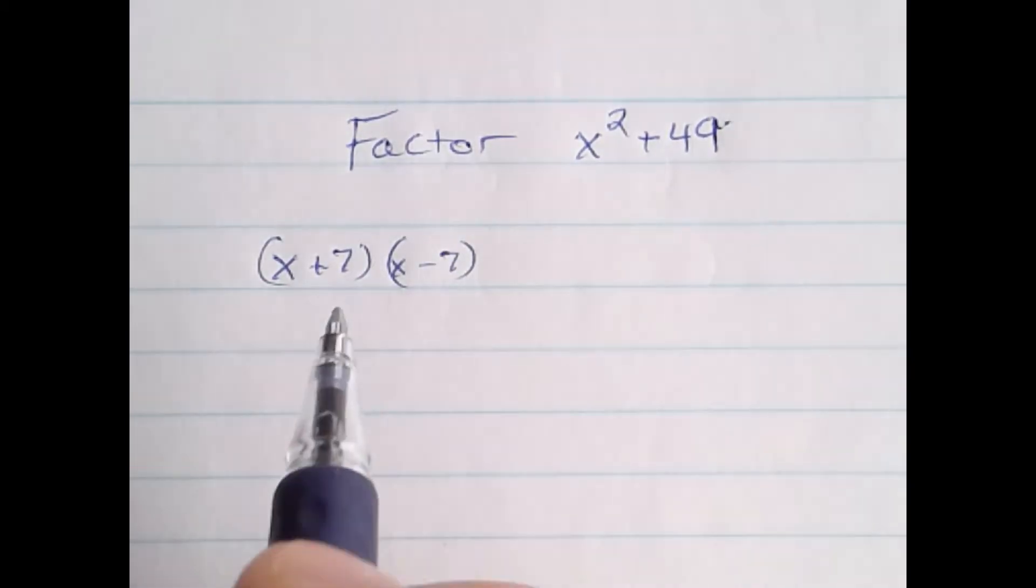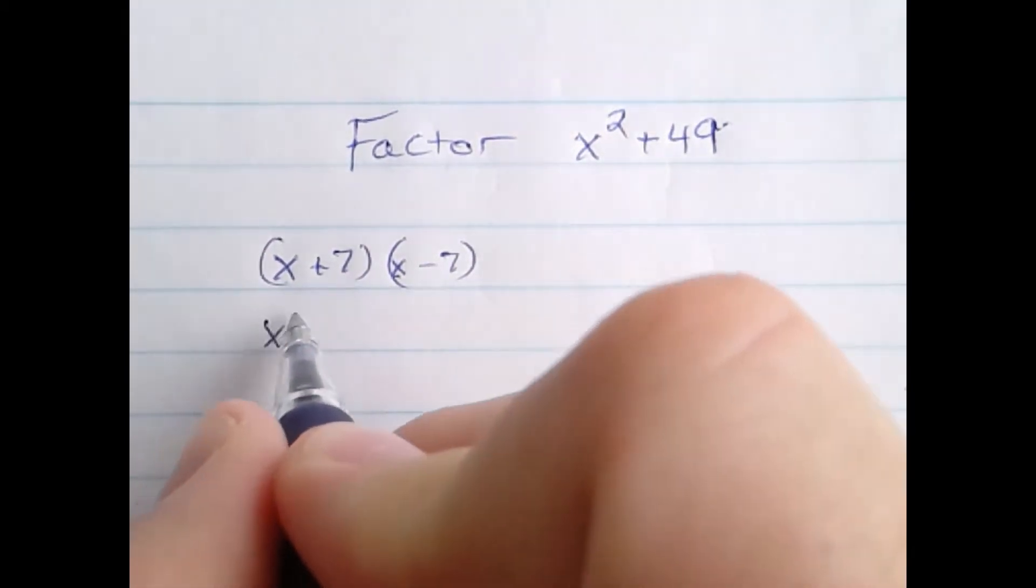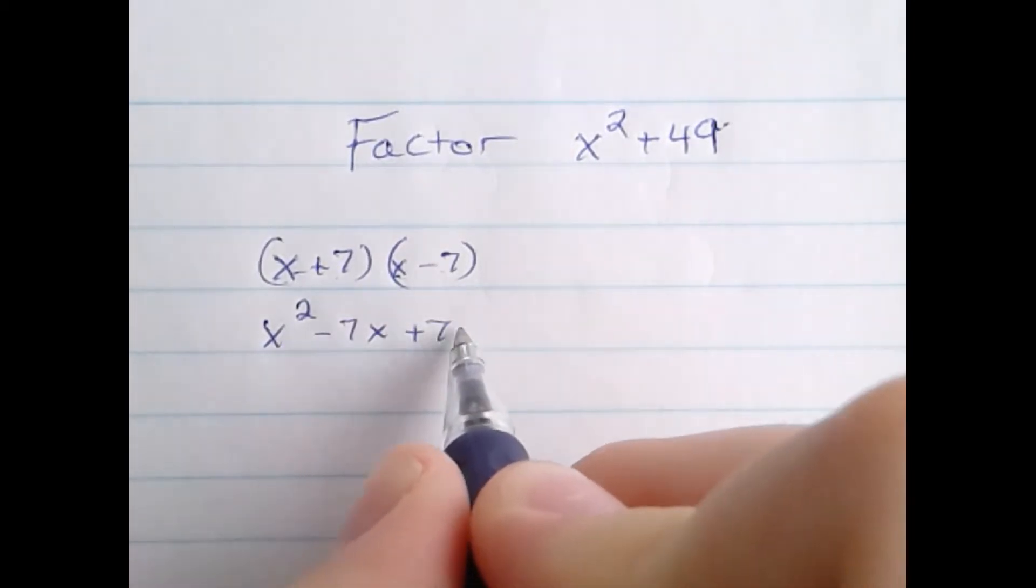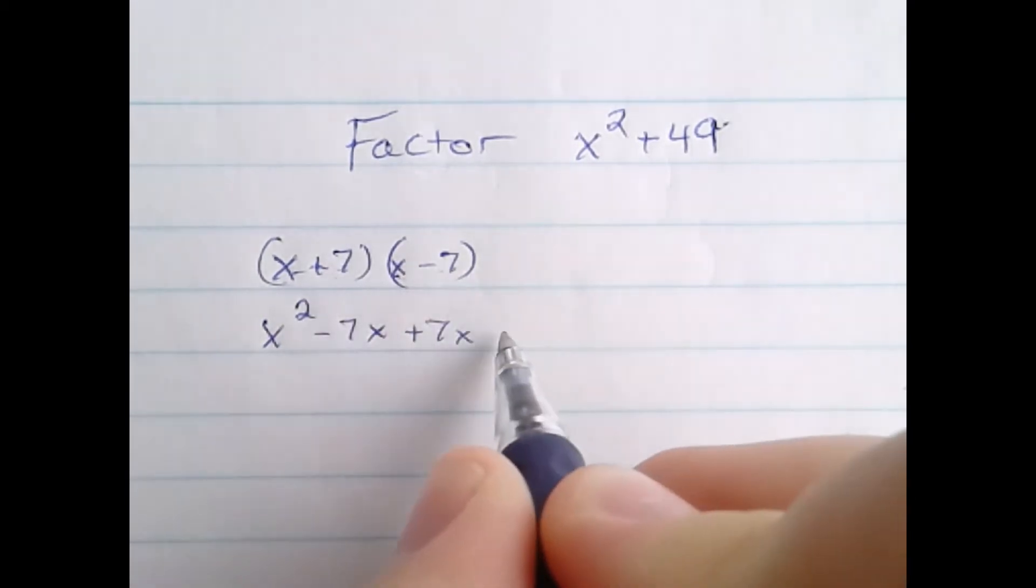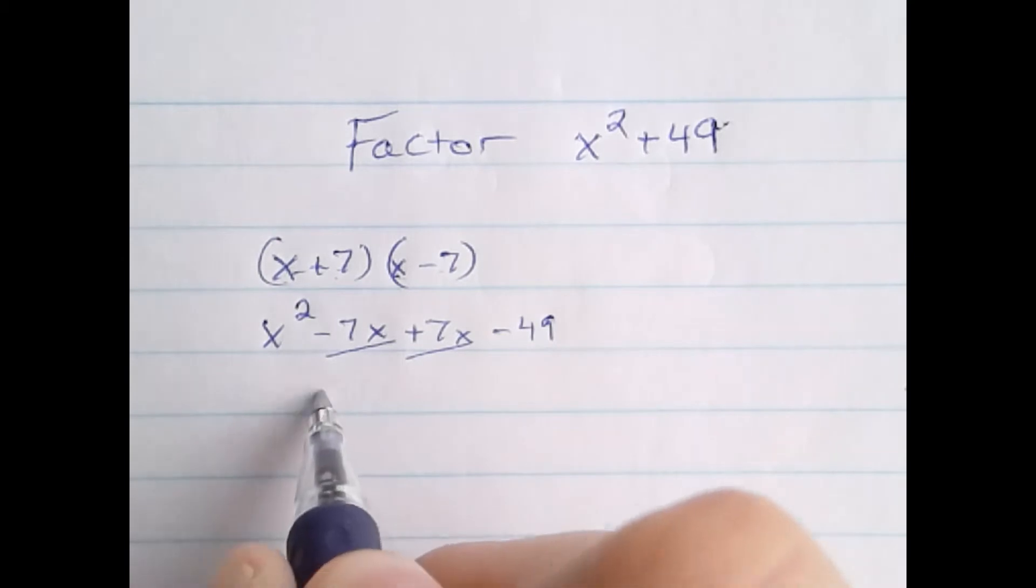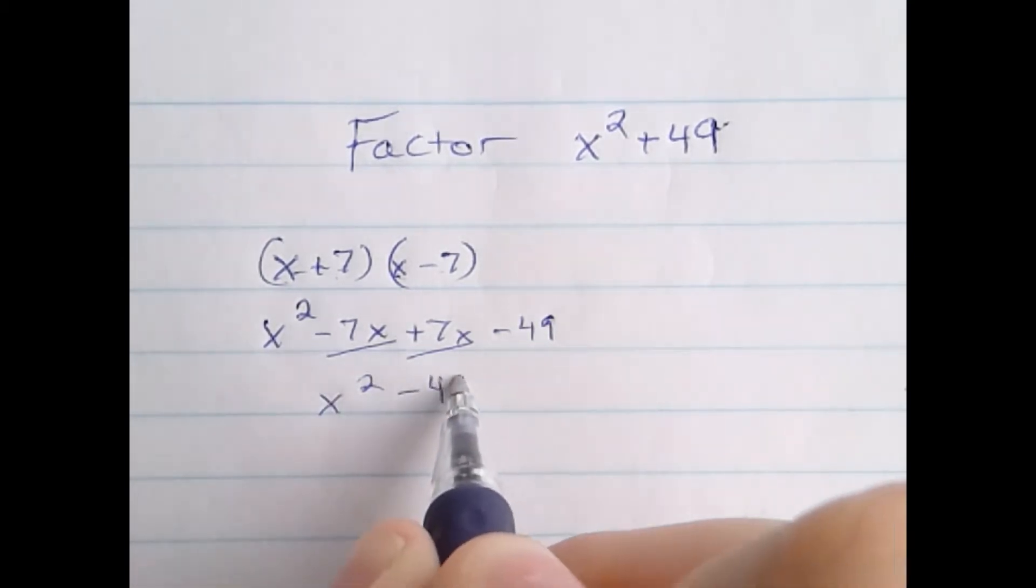Well, if I FOIL that out, x times x is x squared, x times negative 7 is negative 7x, 7 times x is plus 7x, and 7 times negative 7 is negative 49. These terms cancel, leaving me with x squared minus 49. Notice it's a minus.